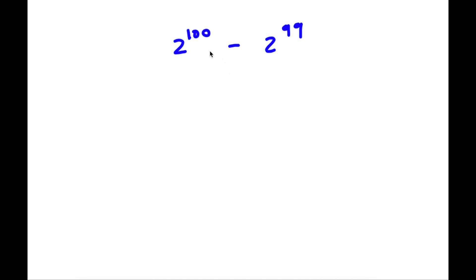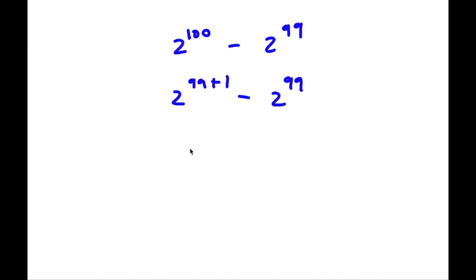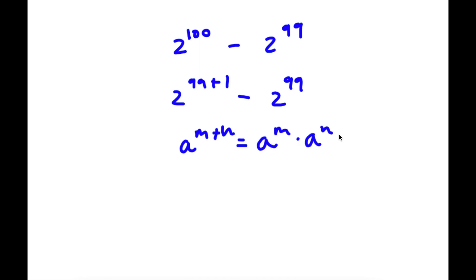Alright, so I have 2 to the power of 100 minus 2 to the power of 99. So 2 to the power of 100 we can rewrite as 2 to the power of 99 plus 1, minus 2 to the power of 99. Now, if I have something in the form a to the power of m plus n, this is equal to a to the power of m times a to the power of n.